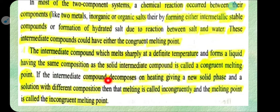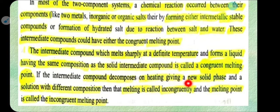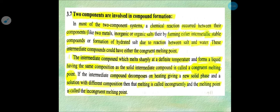If the intermediate compound decomposes on heating and gives one of the solid phases and a solution with a different composition, then that type of intermediate compound is called an incongruent melting point. Let us clarify the concepts of congruent composition, congruent melting point, and incongruent melting point. First, let us understand the congruent composition and melting point with the help of a phase diagram.